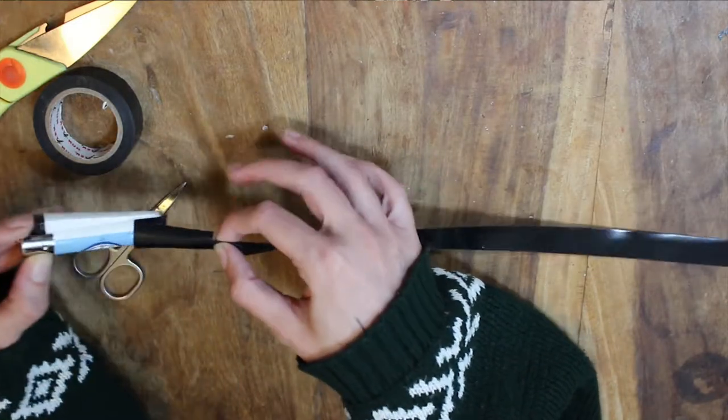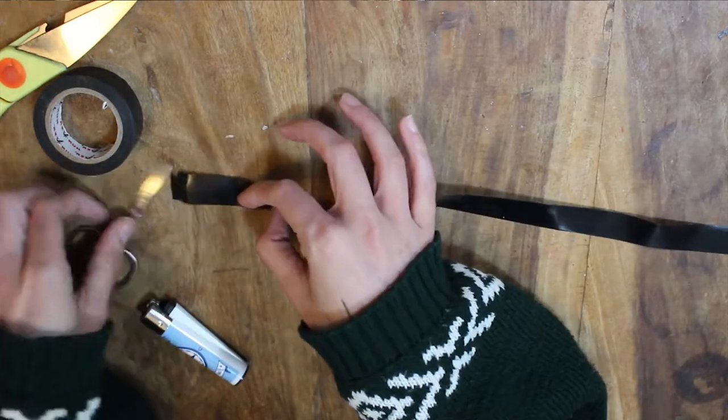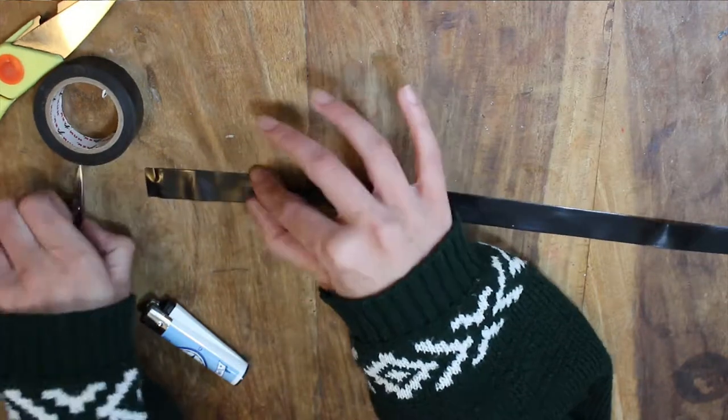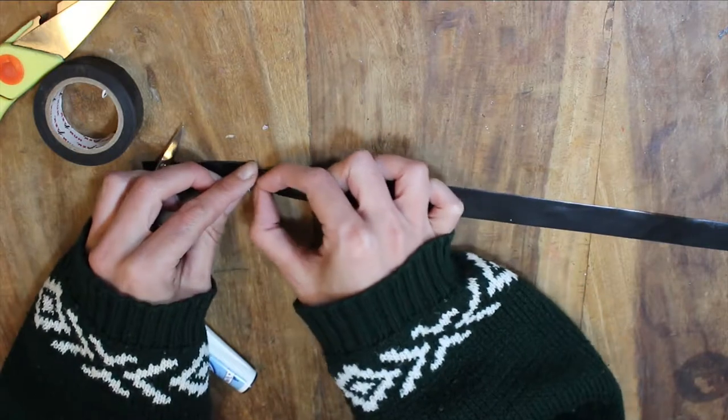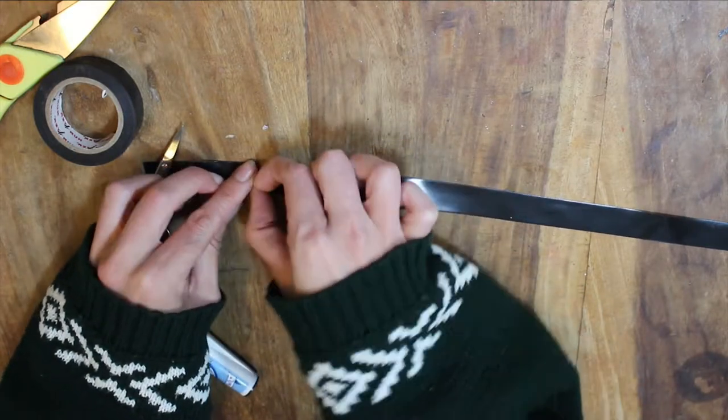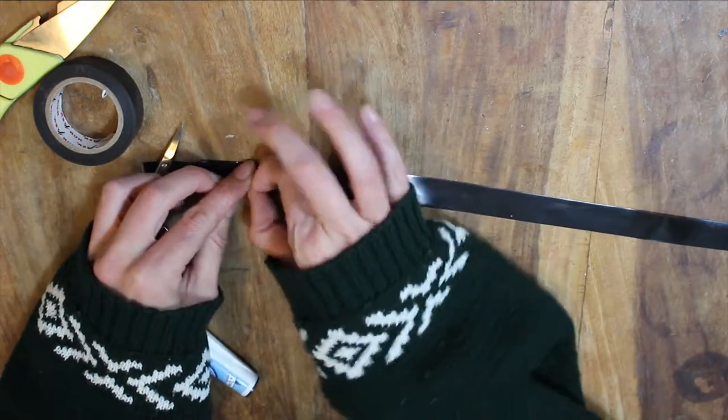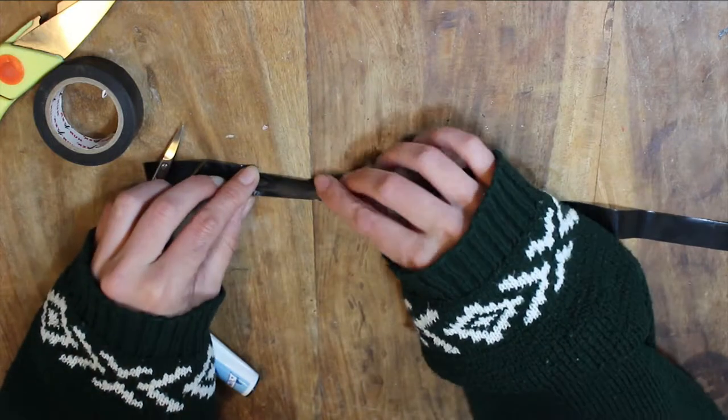Now's the fiddly bit. We're going to make the necklace portion, and obviously we don't want it to be sticky or it's going to stick to your neck and just be a nightmare. So we're going to fold in the two edges. It's much easier to do this if you take the lighter off the tape again and just weight down one end.